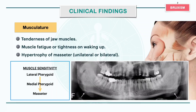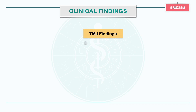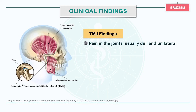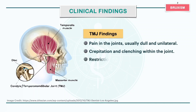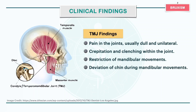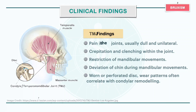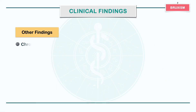The patient will present with dull and unilateral pain in the temporomandibular joints. There will be crepitation and clenching within the joint, restriction of mandibular movements, deviation of chin during mandibular movements, and worn or perforated disc with wear patterns that correlate with condylar remodeling.